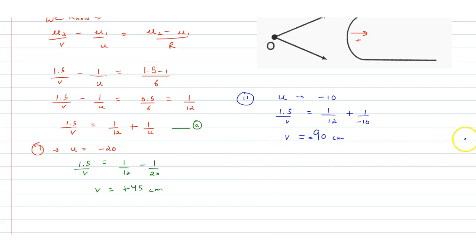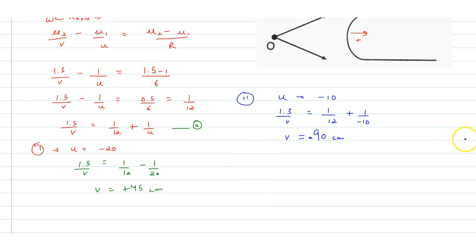Now we will solve u value minus 3, and we will solve: 1.5 by v is equal to 1 by 12 plus 1 by minus 3. Using equation, the value will be minus 6 cm.